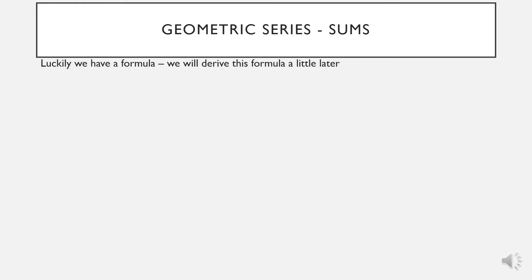Luckily, we have a formula. We will derive this formula a little later. It's one of your formal proofs for the Leaving Cert at higher level. And this is our formula: Sn is equal to a times 1 minus r to the power of n, all divided by 1 minus r. This is in your formula books on the sequences and series pages.